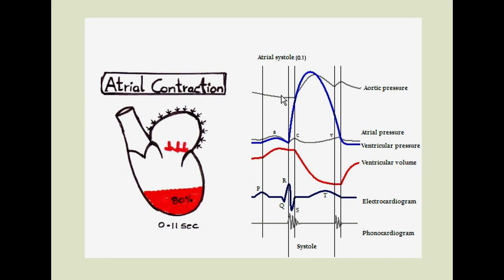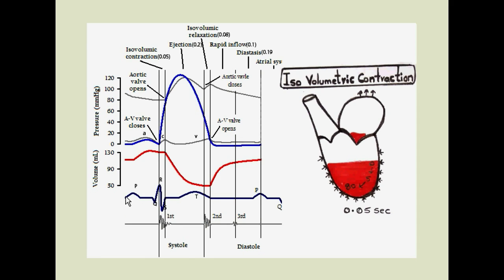Then after the P-wave we get QRS complex which represents depolarization of ventricle and this depolarization causes ventricular contraction. This small period here, we have actually the same period here which is called isovolumetric contraction. In this stage there is no ventricular volume change so this red line remains constant, and as the ventricles contract you can see here the significant increase in ventricular pressure.